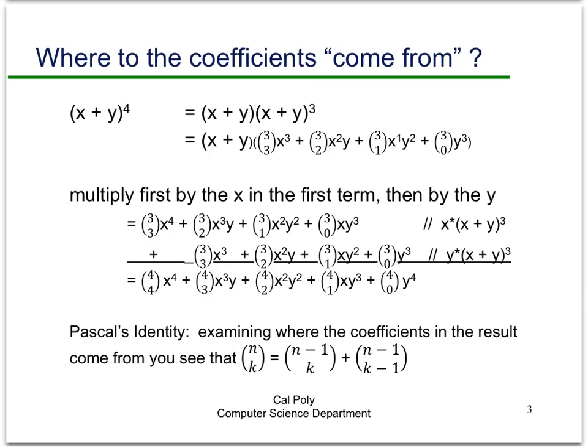Then we multiply this out so when we multiply the binomial expansion of (x + y) cubed by x this is what we get and we multiply it by y this is what we get. Now just like you did in multi-digit multiplication learning that in fourth grade we do the same thing here. We just take the terms that we got by multiplying by x and the terms we got by multiplying by y and then we're going to add them together.